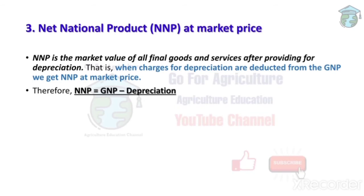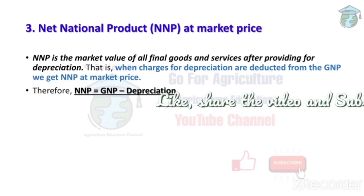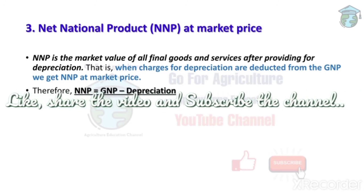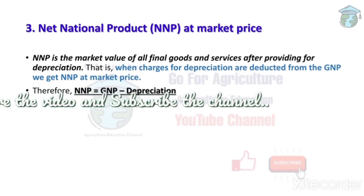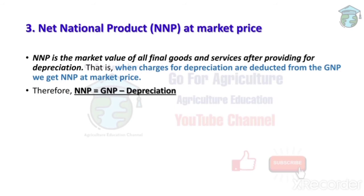Next is Net National Product at market price. This is a little confusing, so listen carefully. Basically, Net National Product means final goods and services after providing for depreciation.